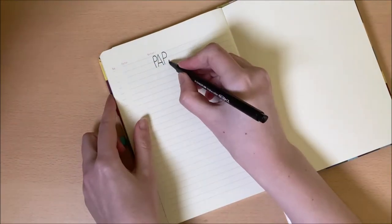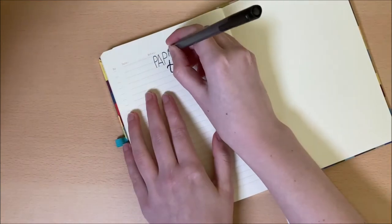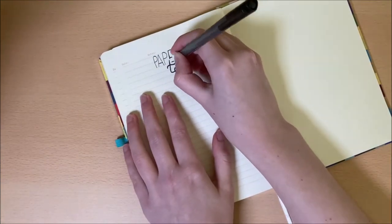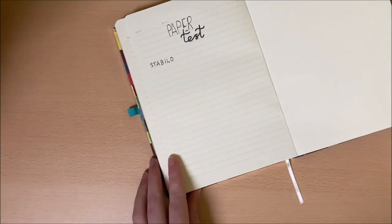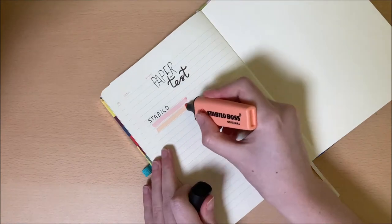So the first thing I always do when I start a new journal is to use the back page as a paper test. This is super helpful if you want to know which pens, markers or highlighters will bleed through the page and which ones don't.